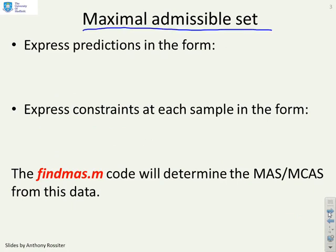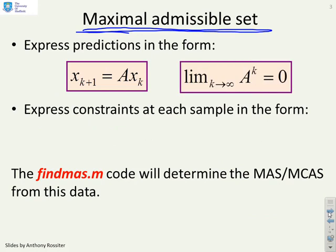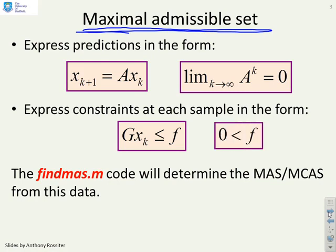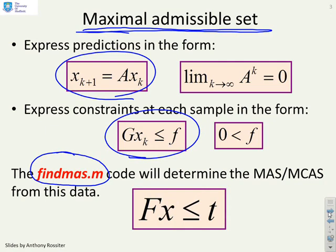First, a reminder of how you might go about finding the maximum admissible set which underpins our constraint handling. You have to express the predictions in a form like this: x_k+1 = Ax_k, where it's assumed that the limit as k goes to infinity of A^k is 0. Also at each sample express the constraints in a form like this: Gx_k ≤ f, where it's assumed that f is strictly bigger than 0. Then there's a piece of code, findmas.m, which will determine the MAS for this system comprising sample constraints and a given transition. The MAS we use the notation Fx ≤ t.